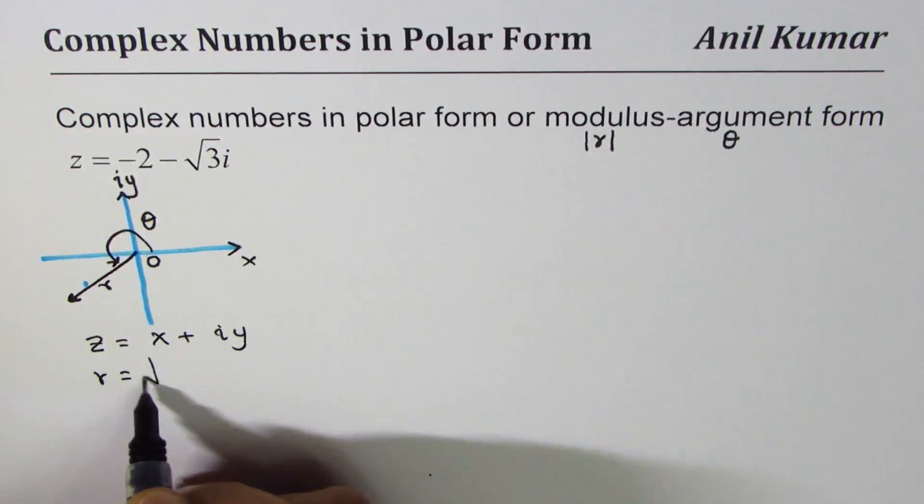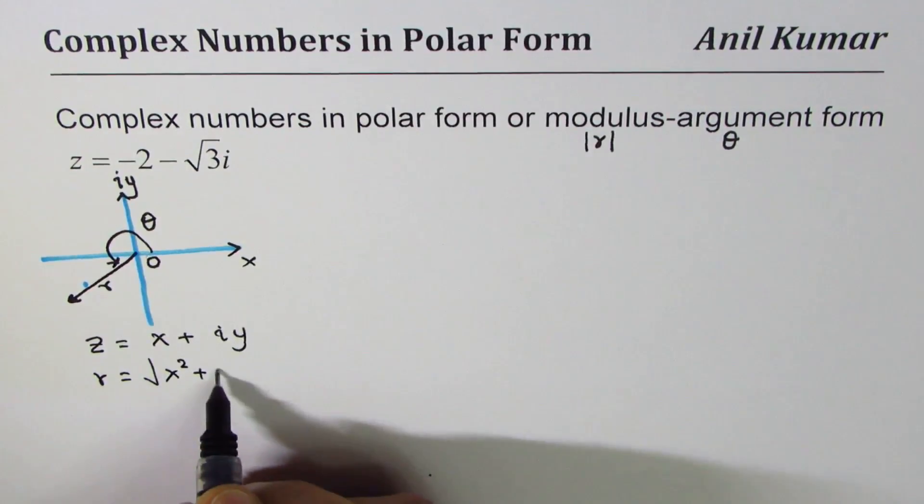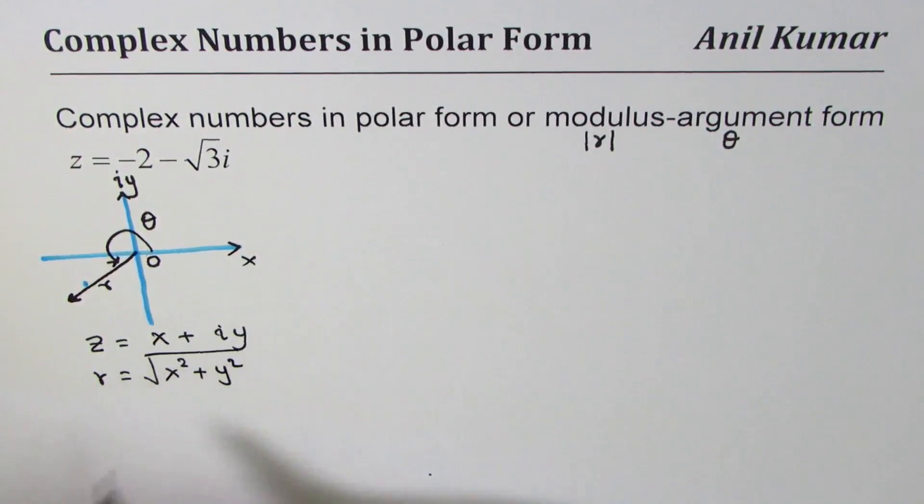Let us see how to do it. General method is normally we say z is x + iy, so r will be using Pythagorean theorem √(x² + y²), and θ you can find using tan θ equals y over x.